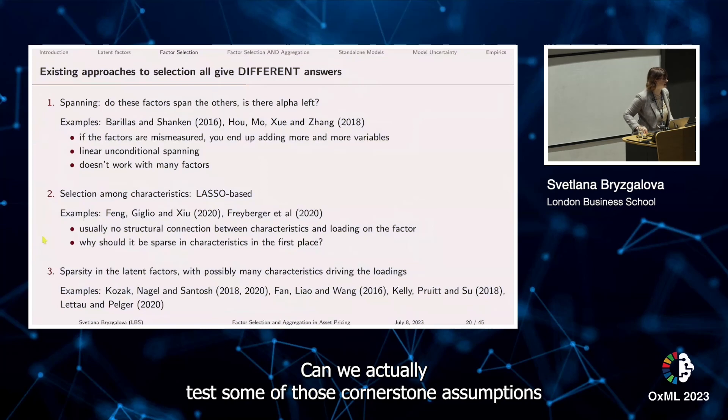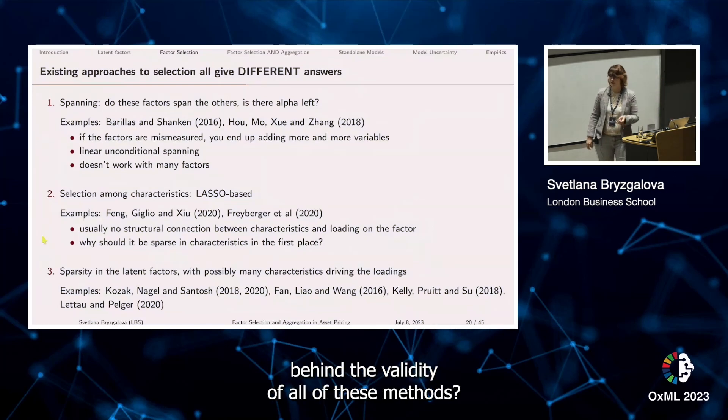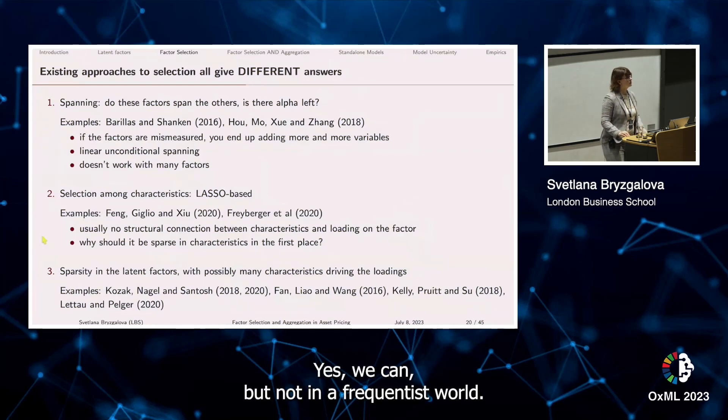Can we actually test some of those cornerstone assumptions behind the validity of all of these methods? Yes we can, but not in the frequentist world.